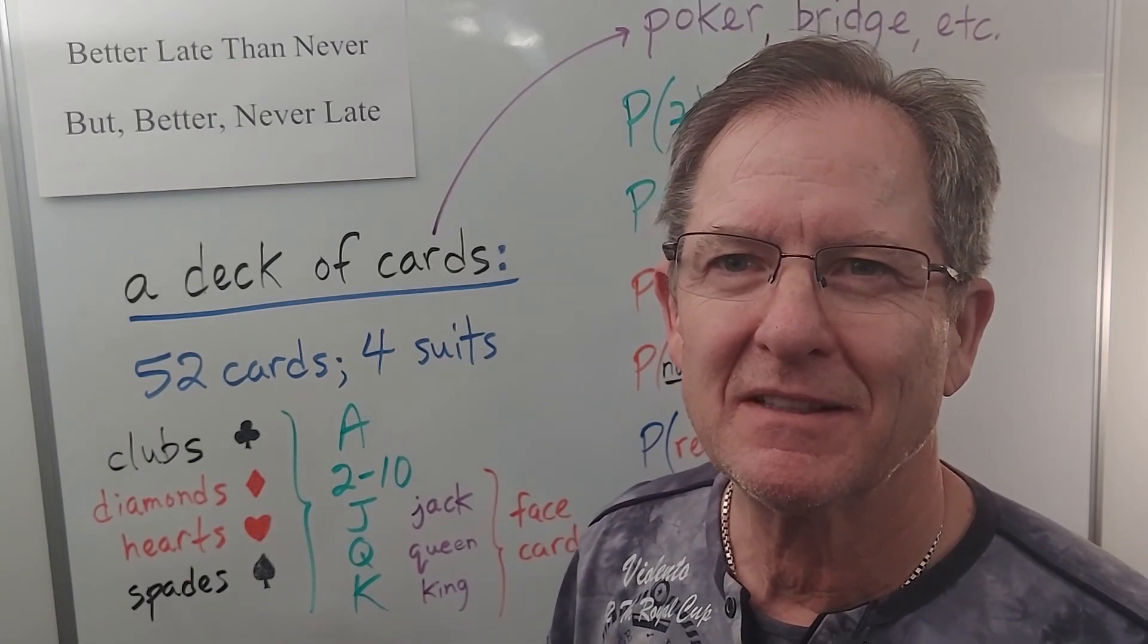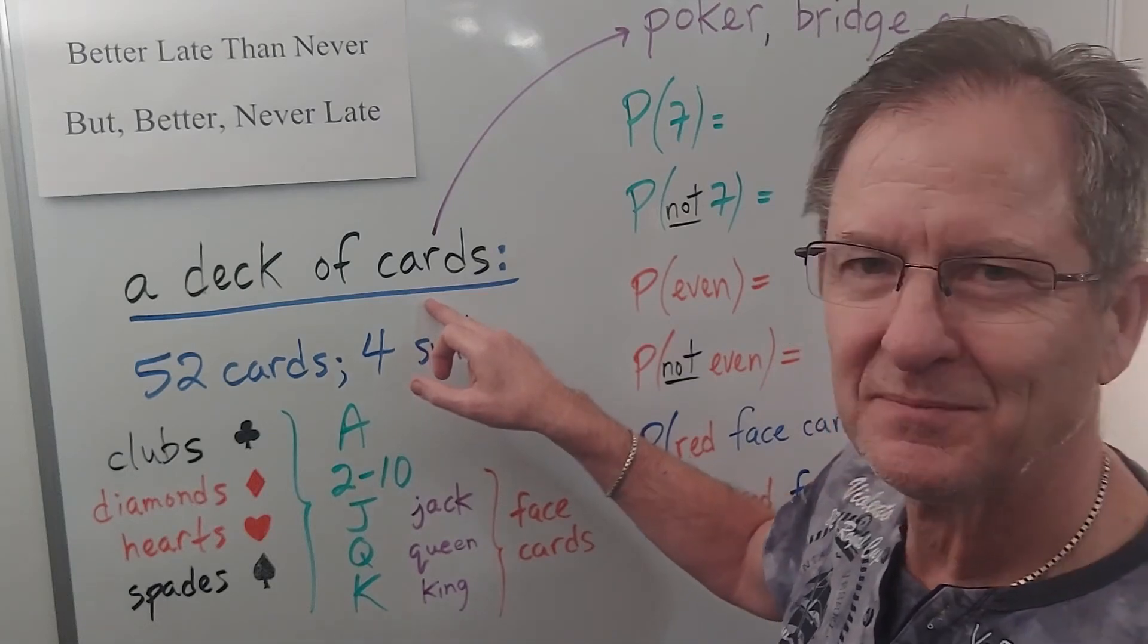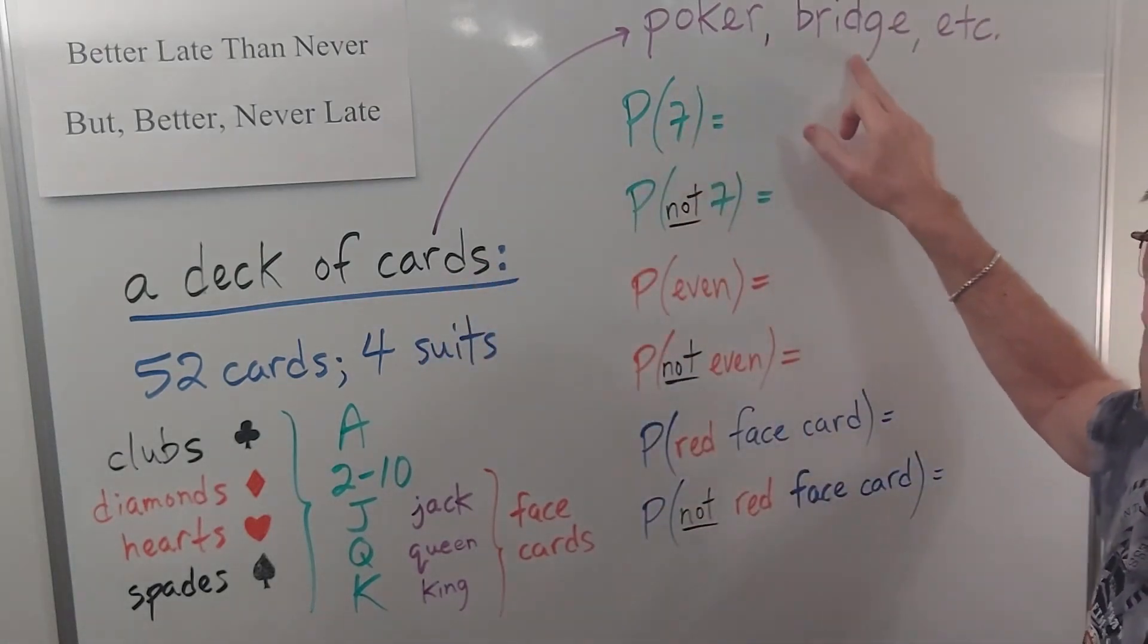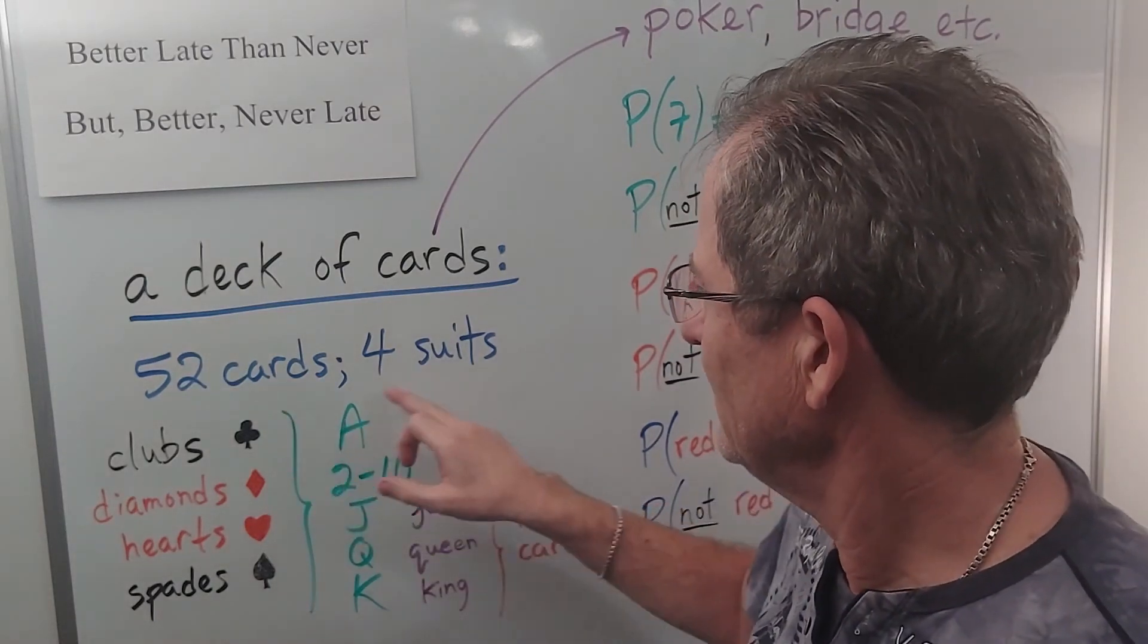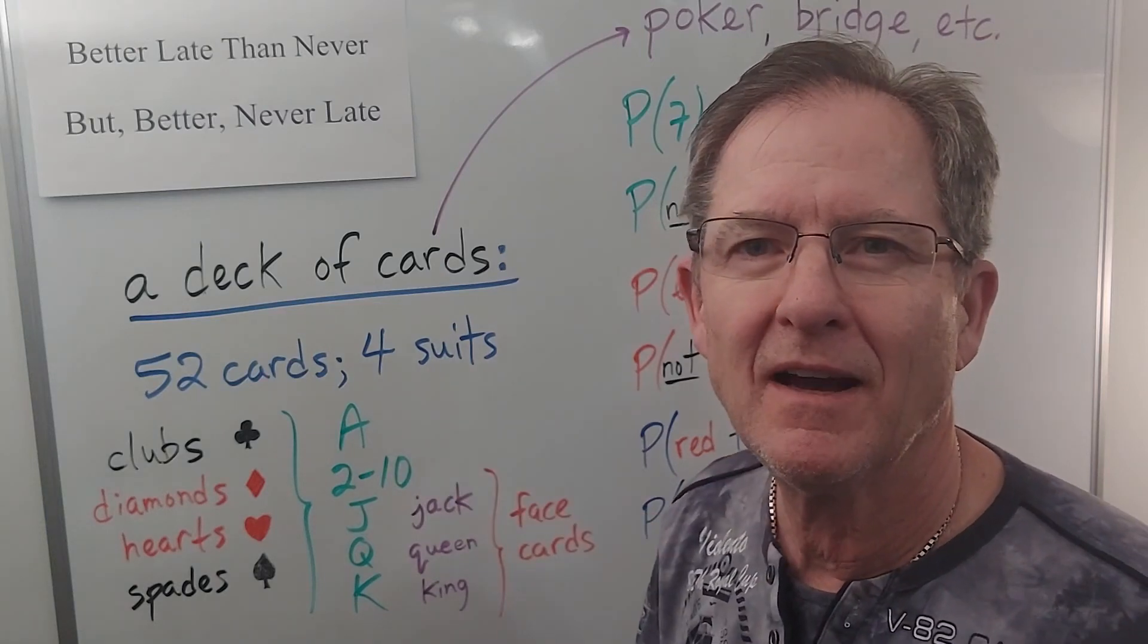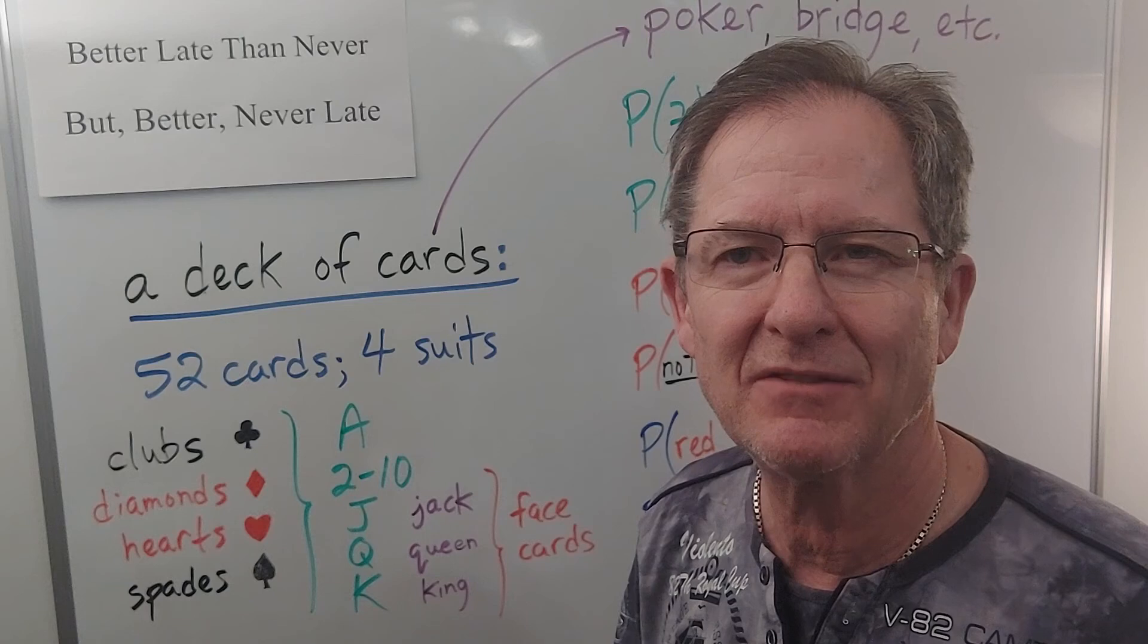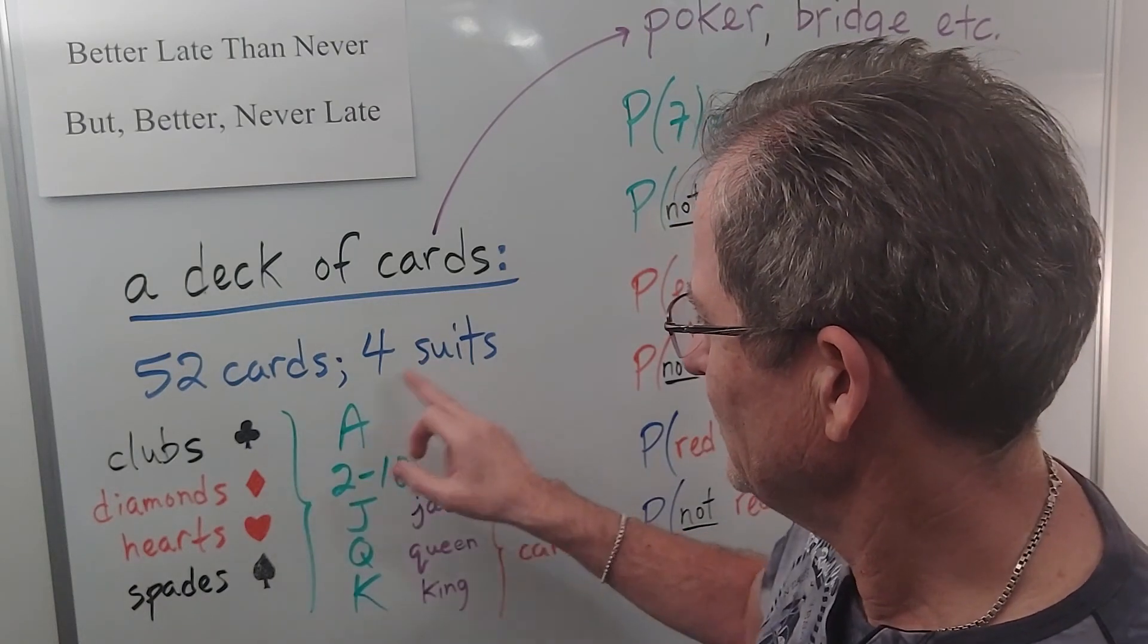Alright today we're going to talk about cards. A standard deck of cards which is what they use in for example poker, bridge and other games consists of 52 cards made up of four suits. It's amazing to me how many young people nowadays do not know about a standard deck of cards.